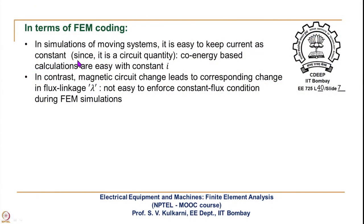In terms of FEM coding, the advantage of using co-energy is that in simulations of moving systems it is easy to keep current constant, since it is a circuit quantity. In contrast, a change in the magnetic circuit leads to a corresponding change in flux linkage lambda, which is not easy to control or enforce as a constant during FEM simulations. That is why we use the co-energy based force computation method.